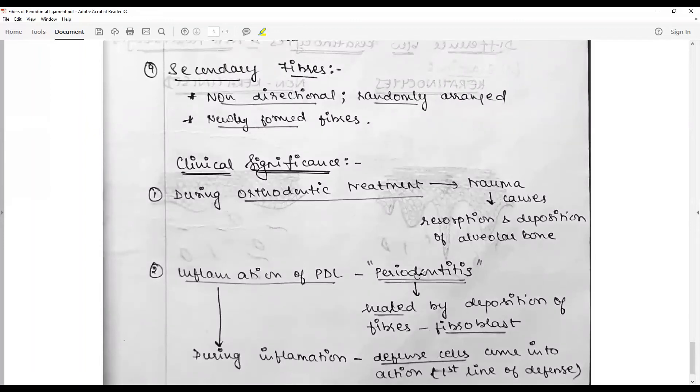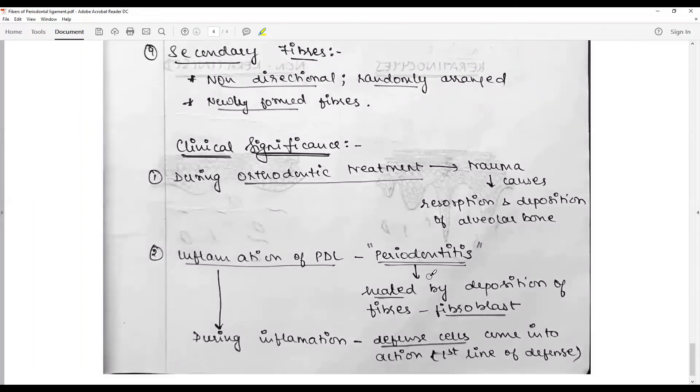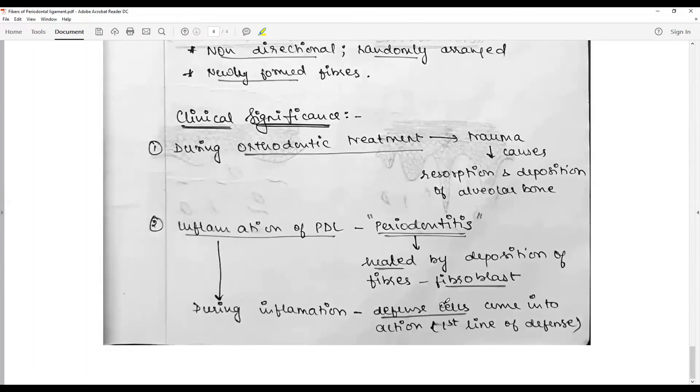Clinical significance includes orthodontic treatment. Inflammation of PDL or periodontal ligament leads to periodontitis and is healed by deposition of fibers. Fibroblasts and during inflammation, different cells come into action as the first line of defense.